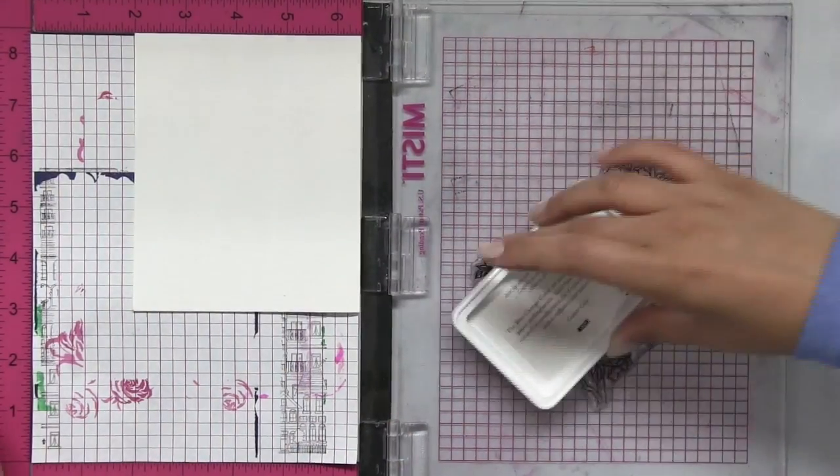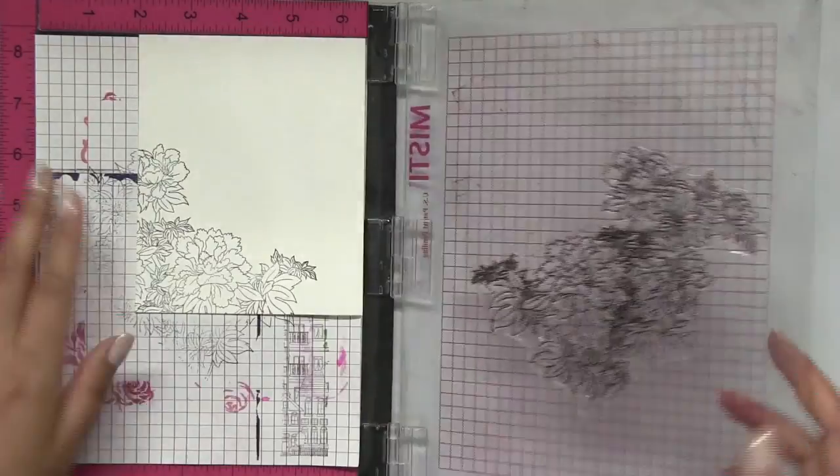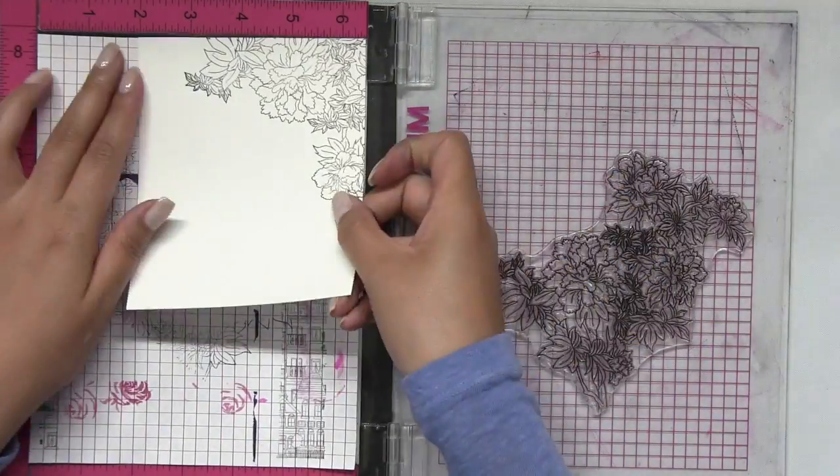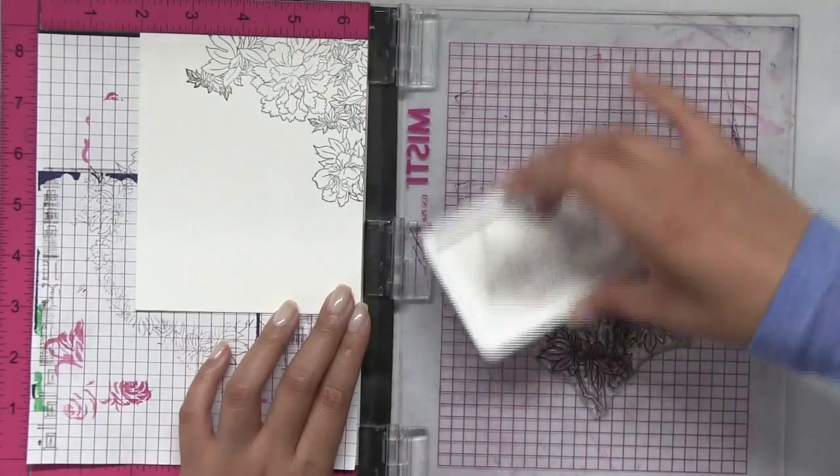So I started off by stamping this beautiful peony tree cluster image onto some watercolor paper and I'm going to stamp this image around the border of this panel.